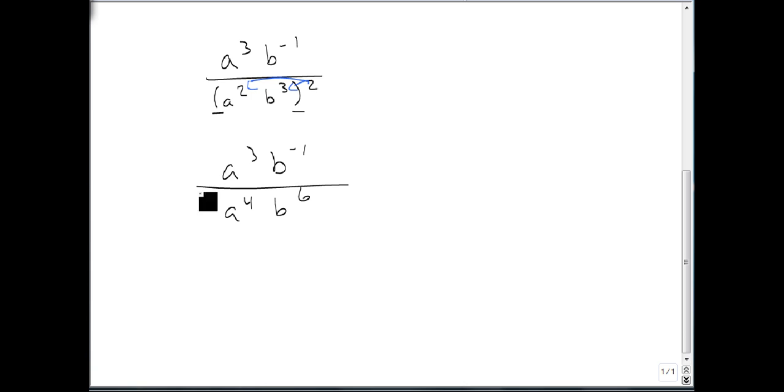Well, now we've got to deal with our repeated basis. And by doing that, we can get rid of our negative exponents all at once. So a cubed over a to the fourth has more a's on bottom than on top. So we're going to write this as one over a to the four minus three, which is one over a to the first. B to the minus one over b to the sixth has more b's on bottom. So we're going to do this as one over b to the sixth minus a minus one, which is one over b to the seventh.